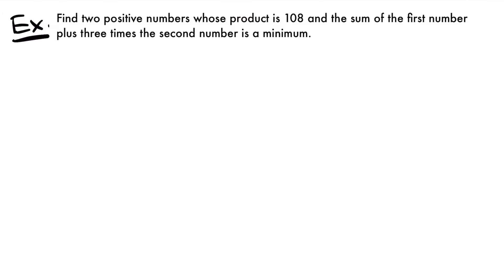Welcome back. Let's start with this example. We have to find two positive numbers whose product is 108 and the sum of the first number plus three times the second number is a minimum.